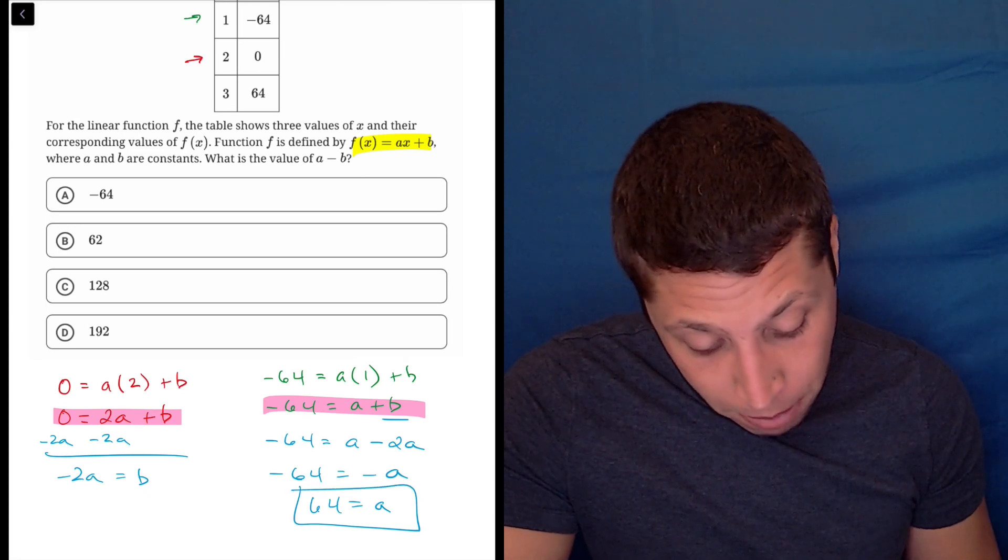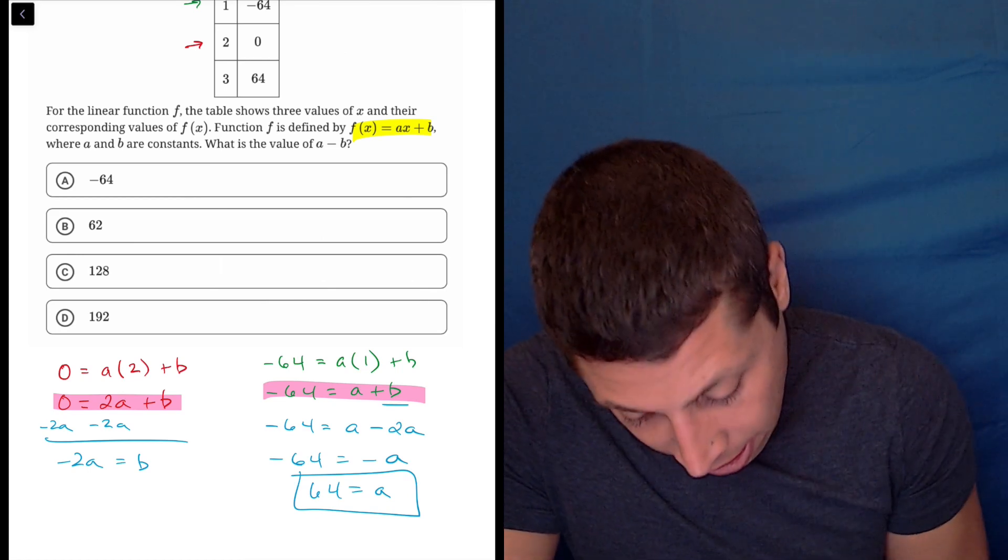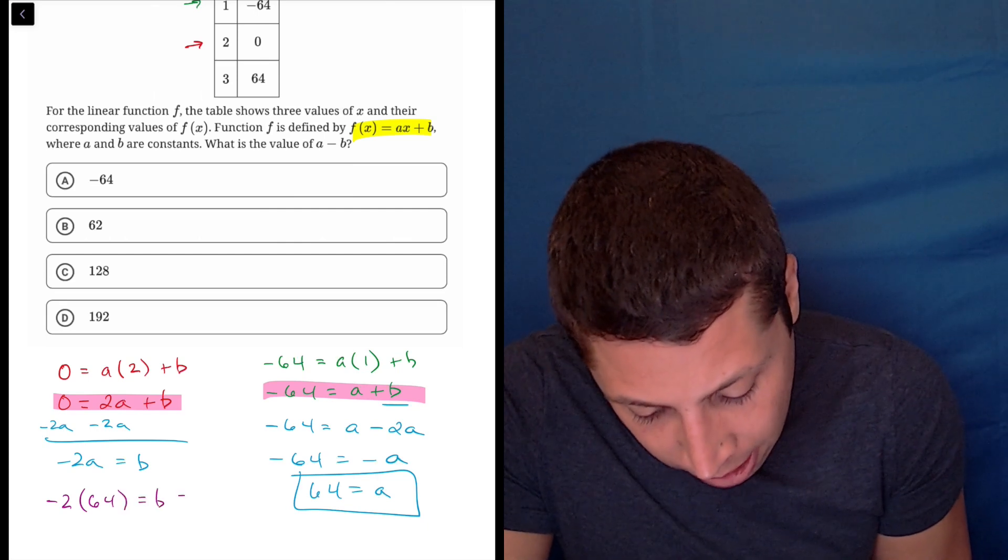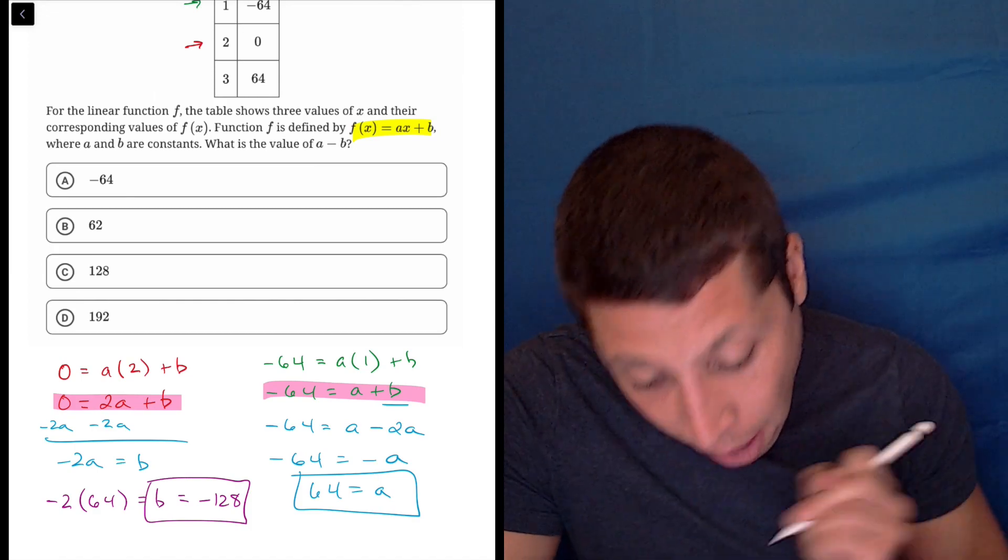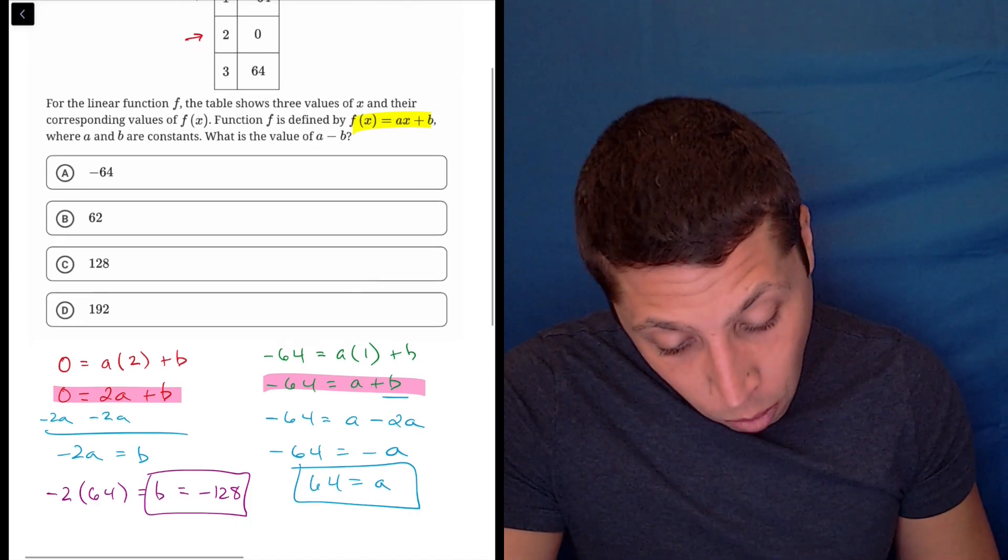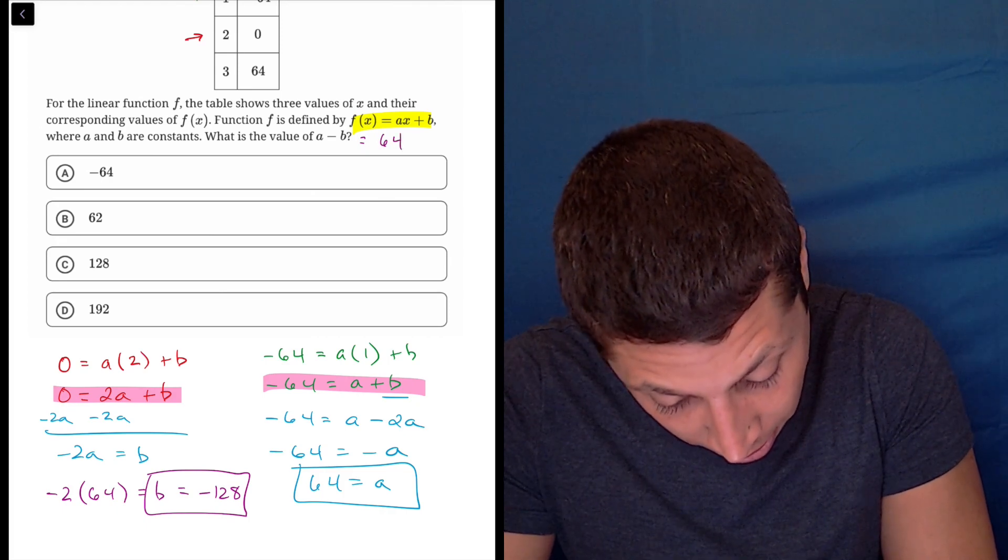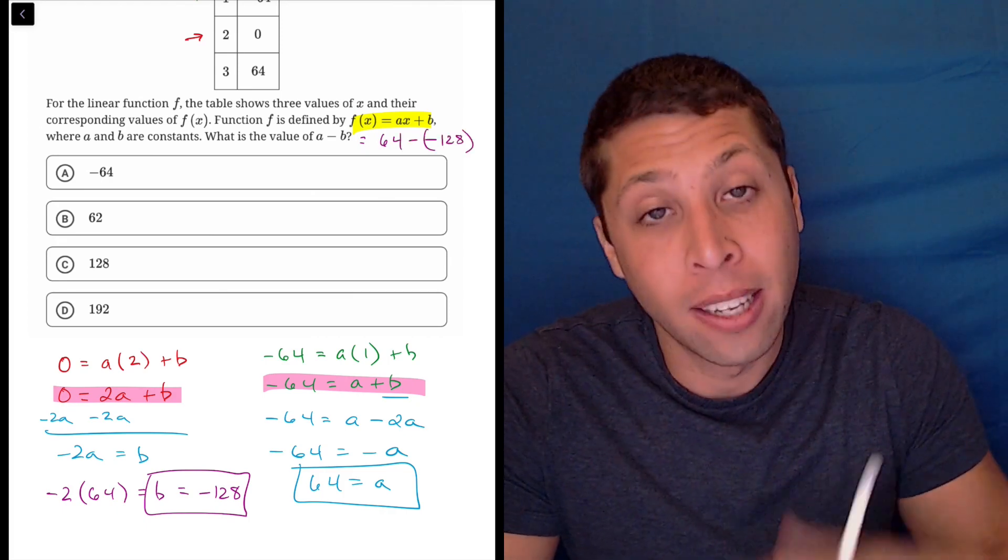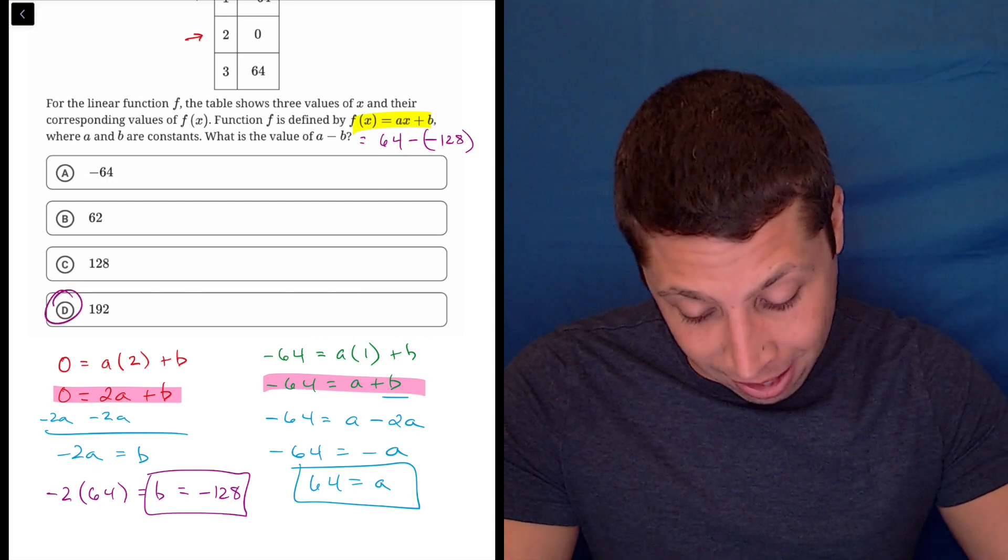Now I can solve for b by plugging the 64 into the other equation here. So negative 2 times 64 is b, so b is negative 128. So now I have values of a and b, what do they want me to do? They want me to subtract, so 64 minus negative 128 is the same as 64 plus 128, which is 192, which is the answer.